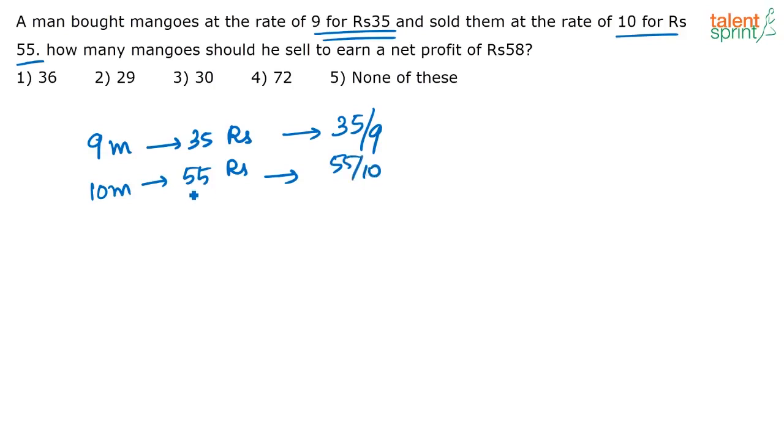Similarly the selling price of 1 mango is Rs. 55 by 10, because he is selling 10 mangoes for Rs. 55. Then what do you do? You get the cost price of 1 mango, selling price of 1 mango, find the difference, find out the profit he makes in 1 mango. And then see to get a profit of Rs. 58 how many mangoes he has to sell.